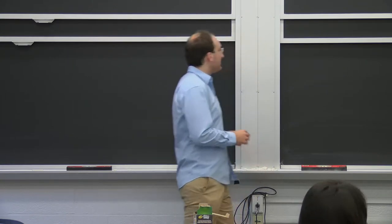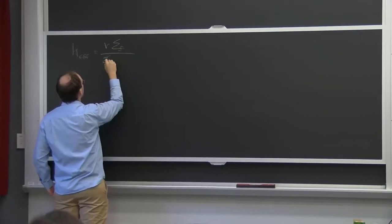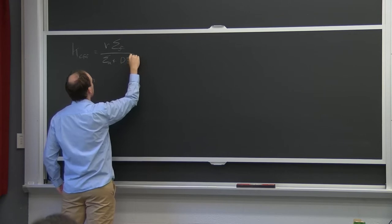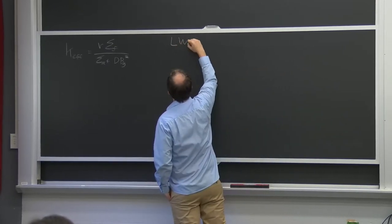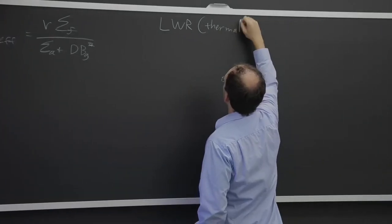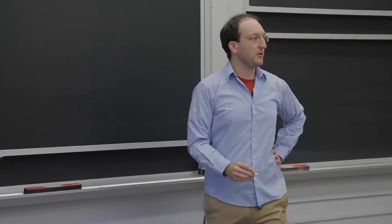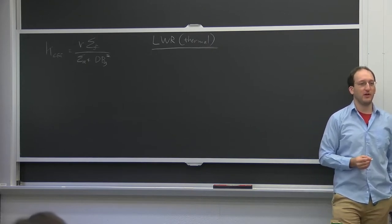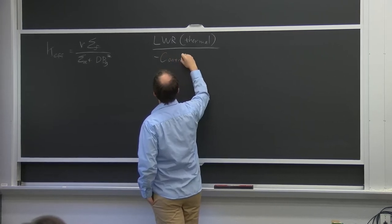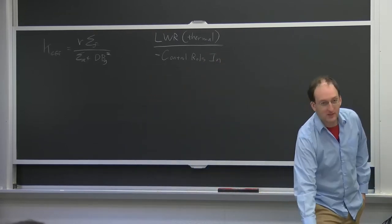First, before we get into transients, I wanted to talk a bit about criticality and perturbing it. So let's say we had our old single-group criticality relation, and I'd like to analyze just intuitively or mentally with you guys a few different situations. Let's say we're talking about a light water reactor or a thermal reactor, like the MIT reactor. So what sort of things could you do to perturb it? And how would that affect criticality? Like, for example, let's say you shoved in a control rod.